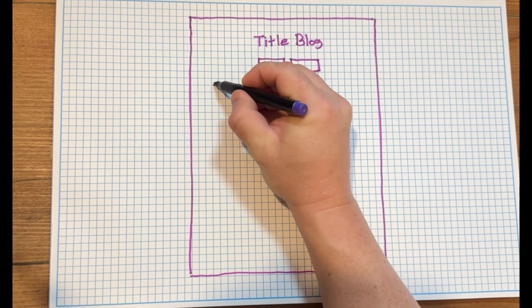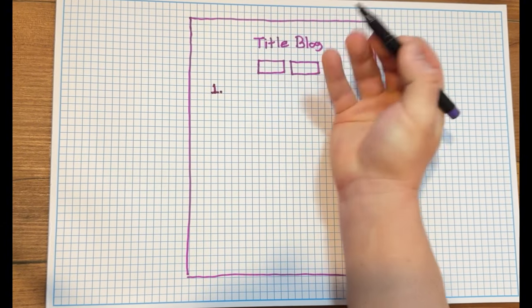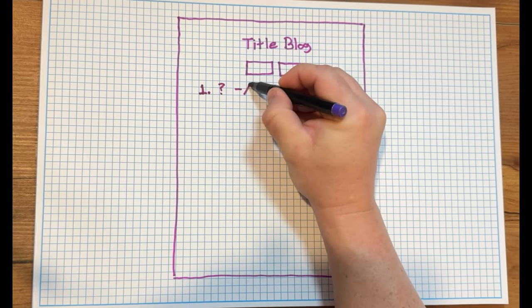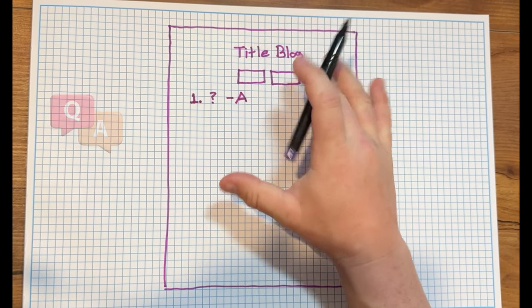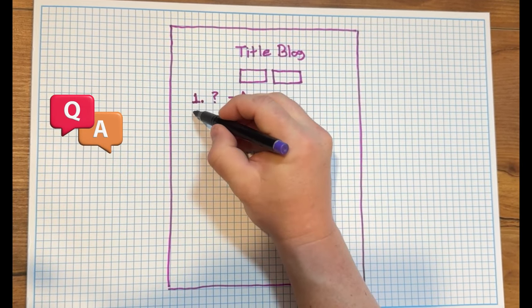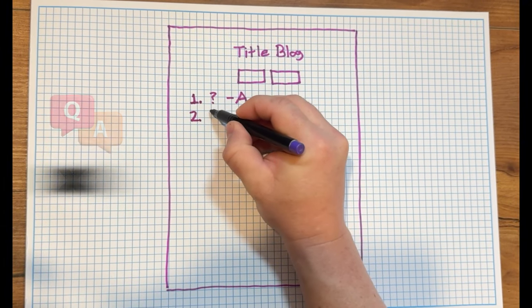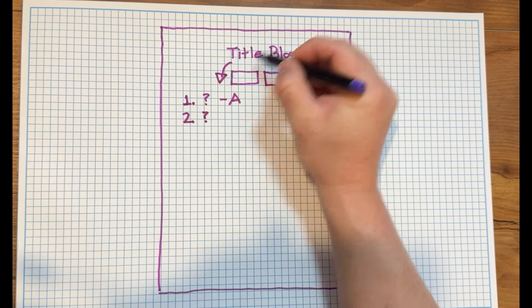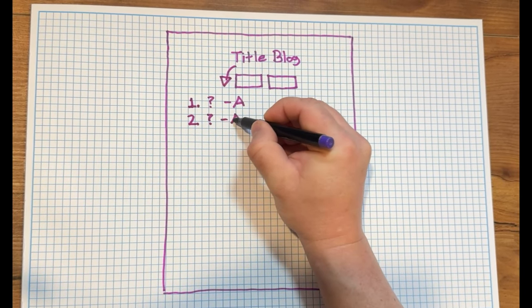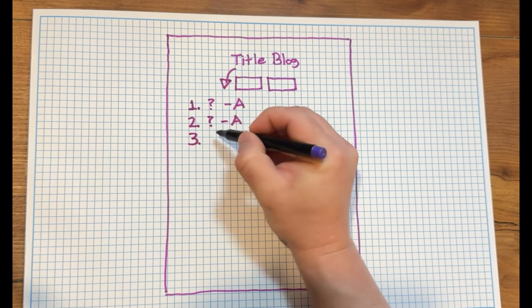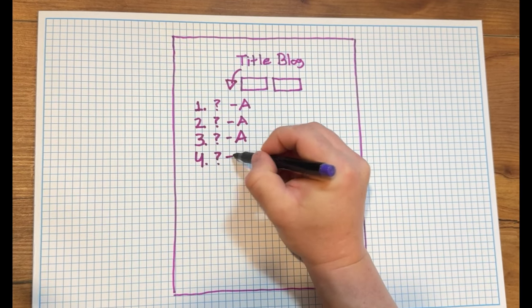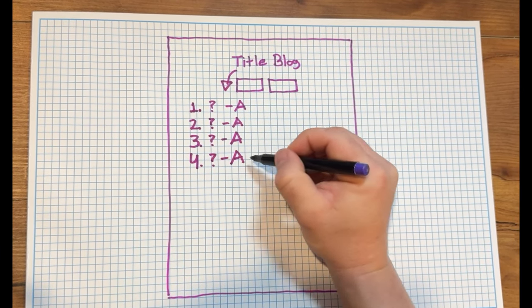For the generative AI section: question one is a common question your customers are asking, and then give them the answer in a short sentence. Do this four times. The key is: what's the blog title, and what are the common questions around it? Give quick answers and keep it to four — if they want more, they can scroll down and read the rest of the blog.